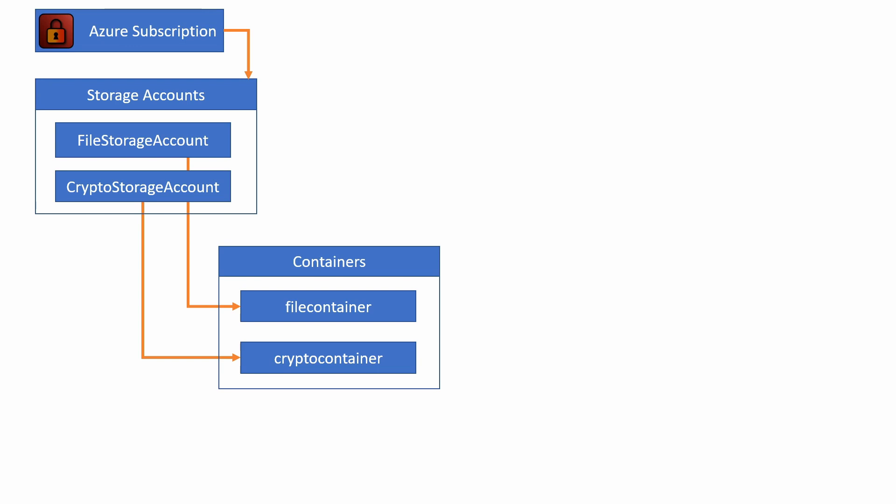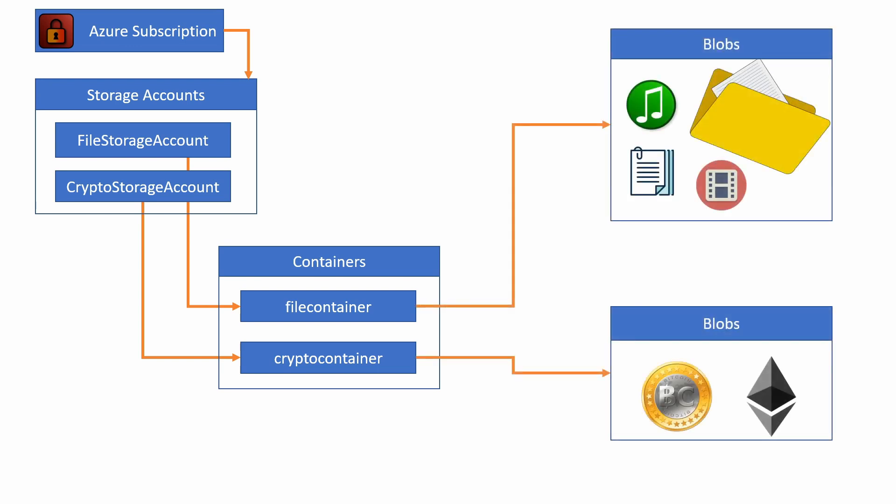A storage account can have an unlimited number of containers. In our case, we have a file storage account with only one container — the file container. The third type of resources in Blob Storage are the Blobs, which stand for binary large objects. Blobs can be files of any type, from text to video to executable. In short, a Blob is anything that we can store on a computer.